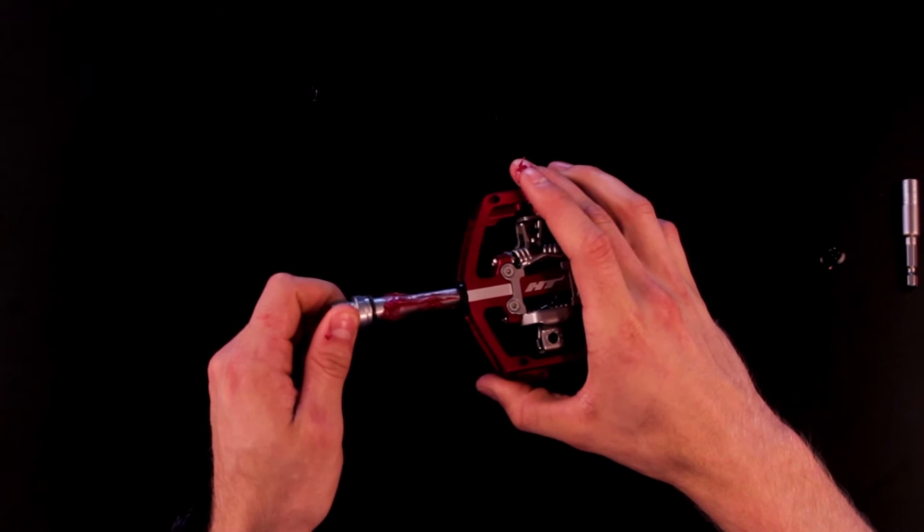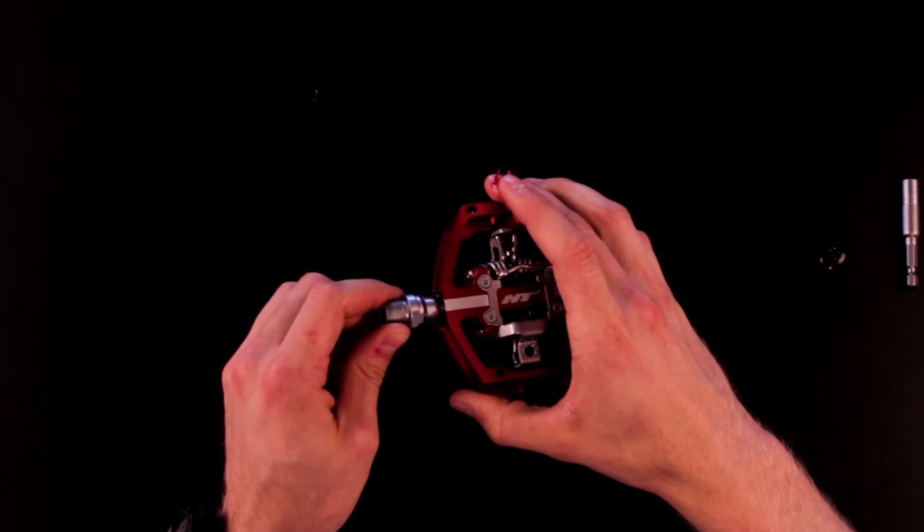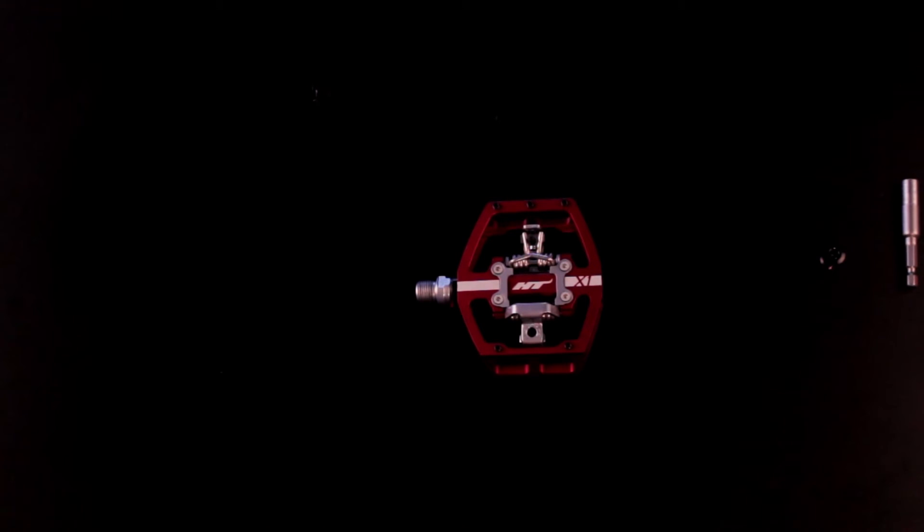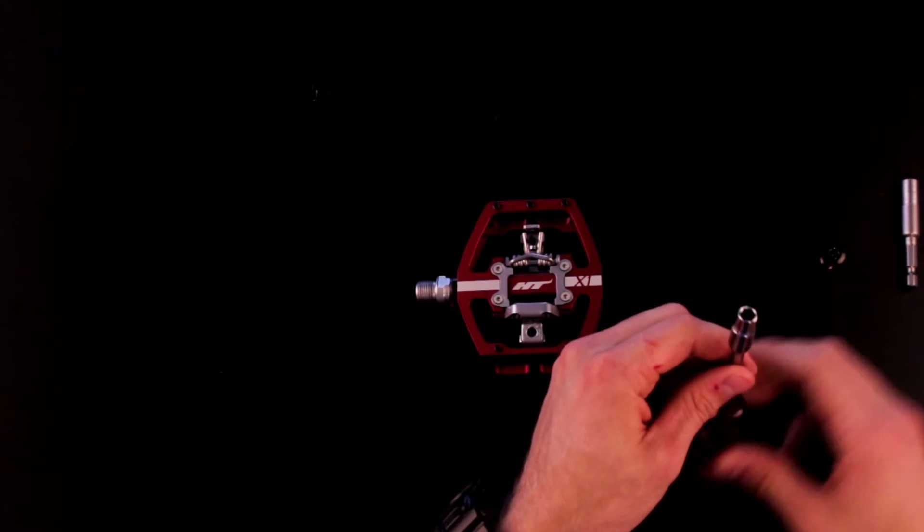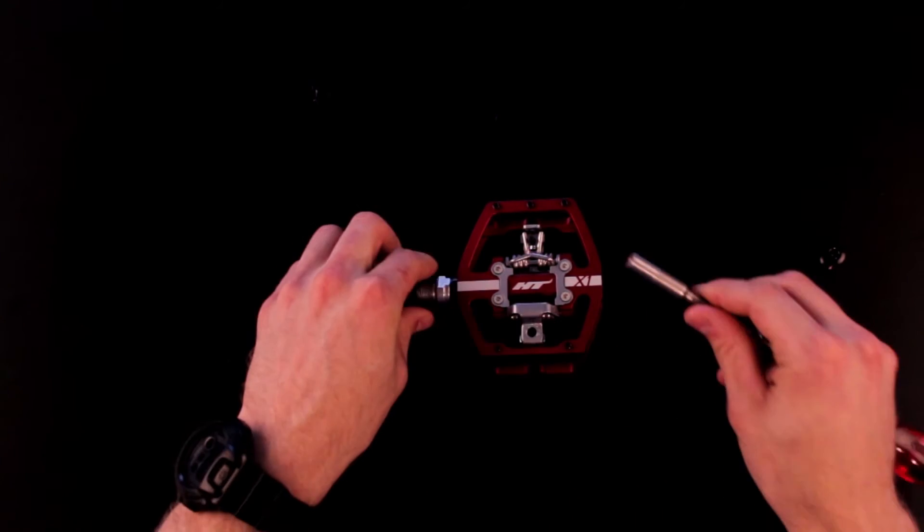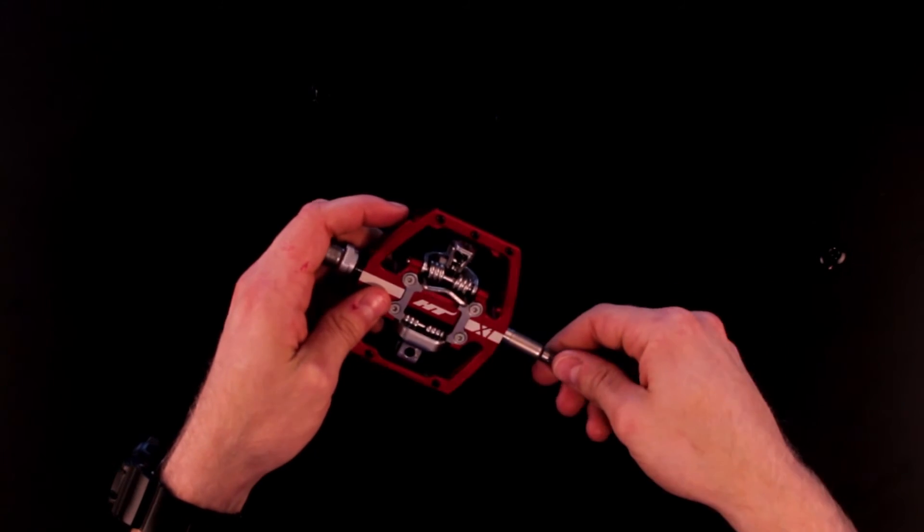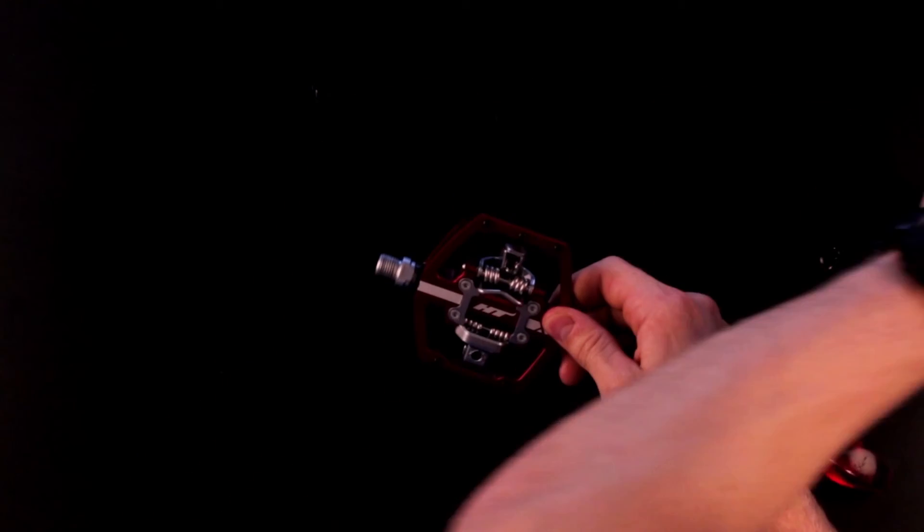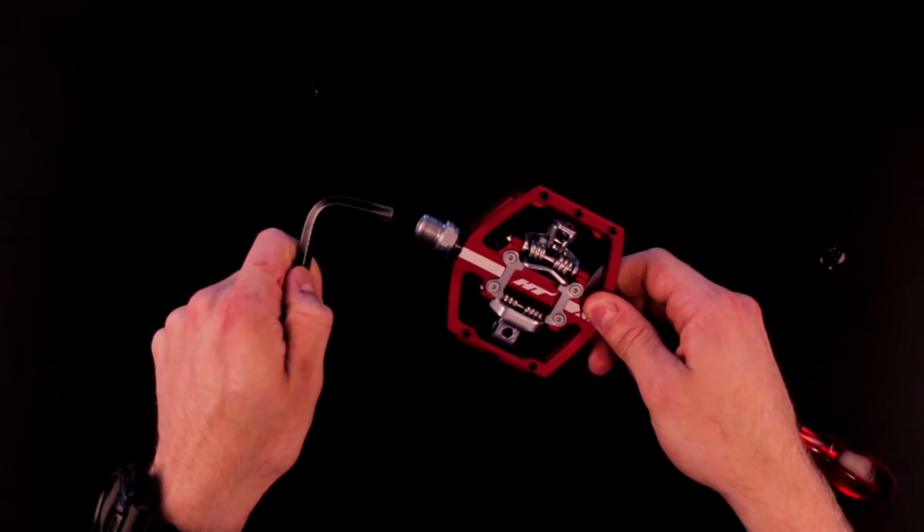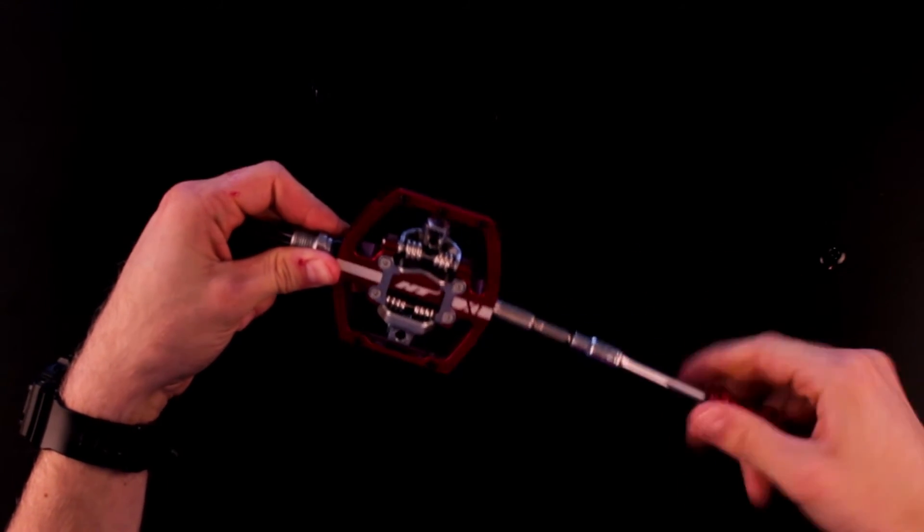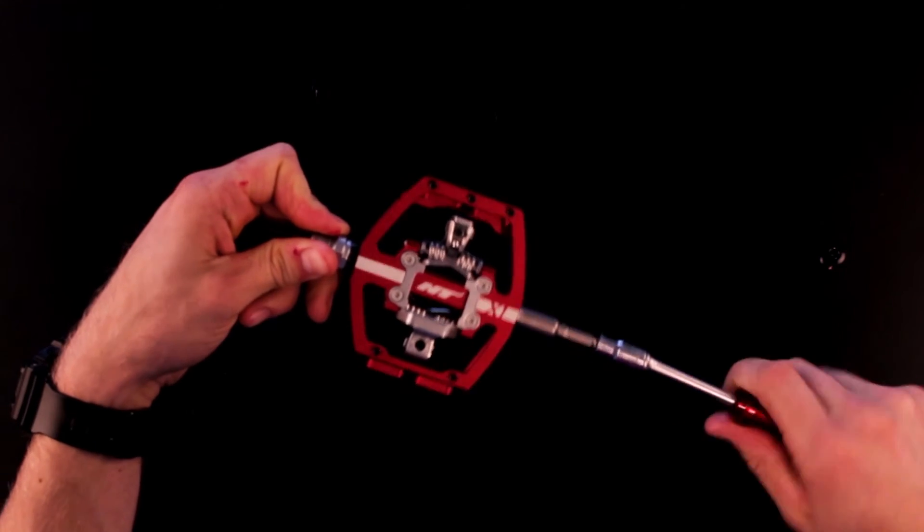Now reinsert the axle into the pedal. Next we'll reinsert the nut—you'll see it's still in the socket. Just slightly thread it on with your fingers to make sure you don't cross-thread the axle. For the right pedal anti-clockwise, for the left pedal clockwise. Hold the axle tight with the Allen key and thread it on the opposite way as before.